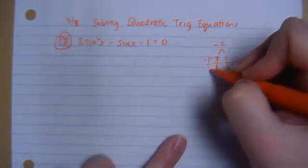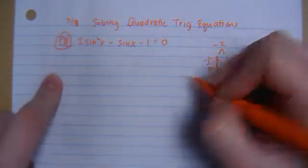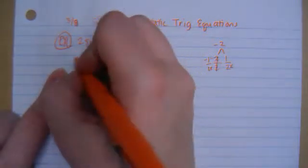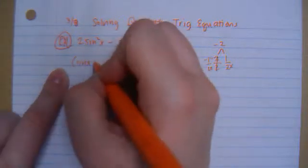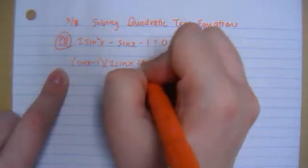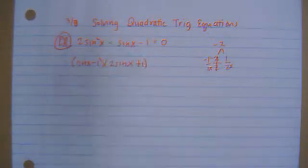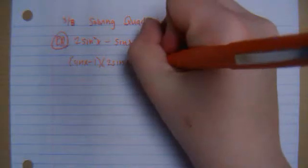Reduce, so that's negative 1 over 1. So I have 2x plus 1 and x minus 1, but I'm going to be using sine. So I'm going to have sine x minus 1 and 2 sine x plus 1. If I were to foil this back out, this is the answer I would get. Equals 0.